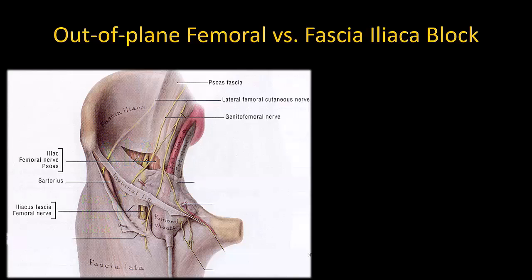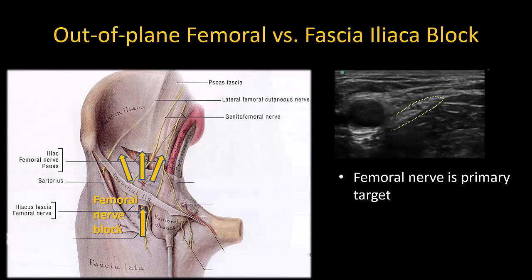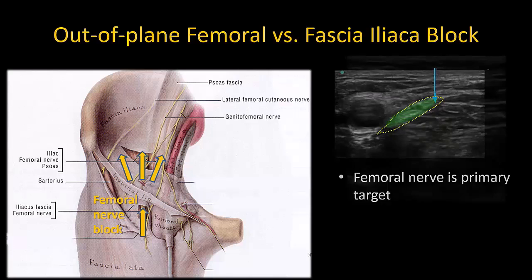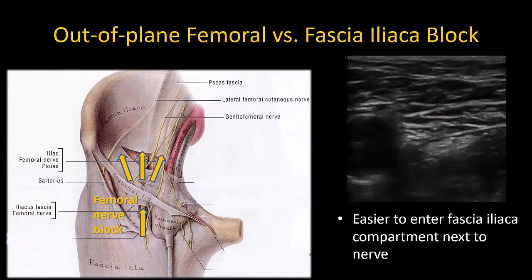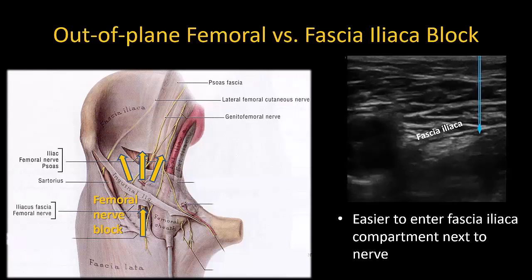I personally prefer to do a femoral nerve block rather than a true fascia iliaca block for hip analgesia because, A, the femoral nerve is the main therapeutic target of interest, so why not deposit local anesthetic directly around it? And B, I personally find it much easier to enter the plane under fascia iliaca next to the femoral nerve, as there is much more of a potential space. More laterally, it can be tricky to avoid injecting either too superficially above the fascia iliaca or too deep within the iliopsoas muscle.